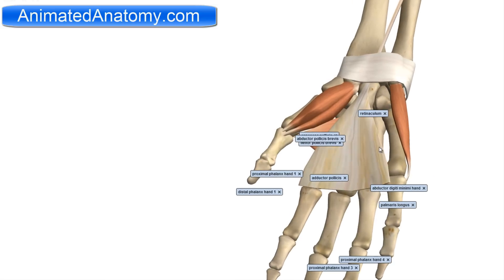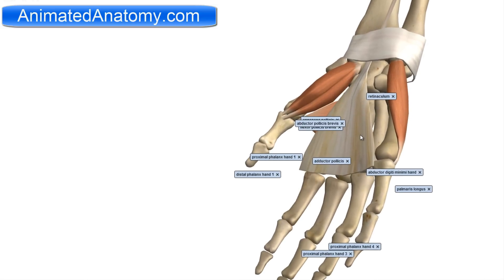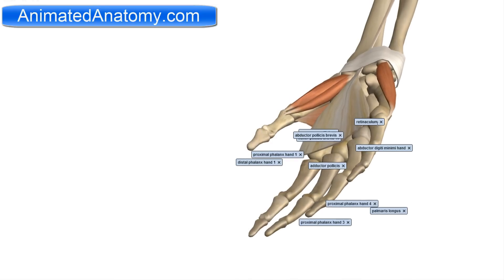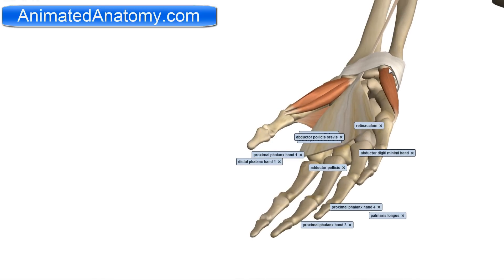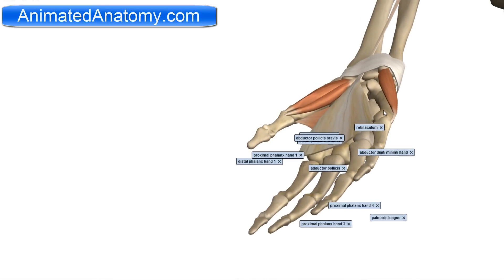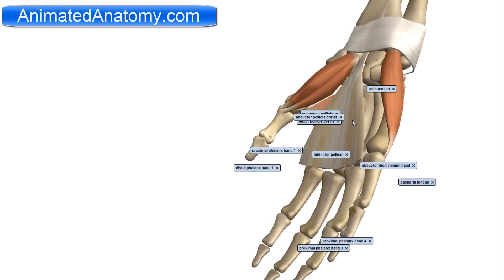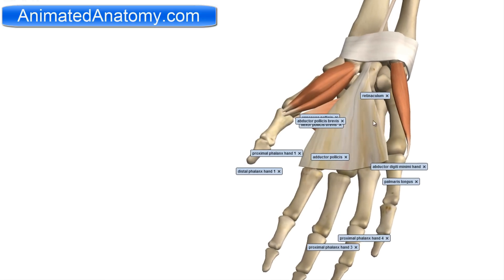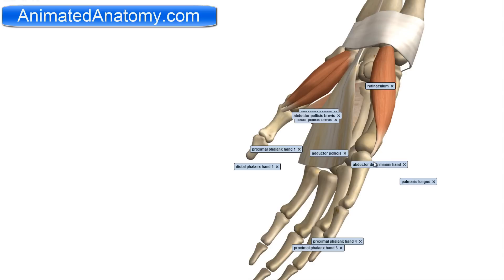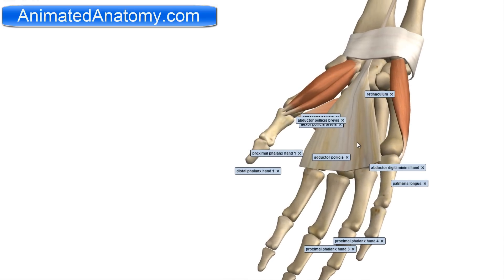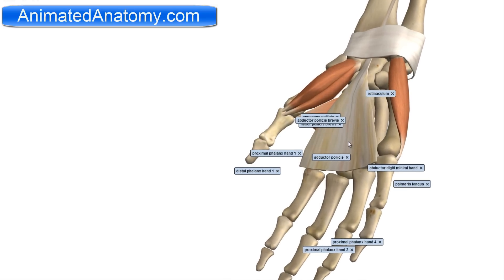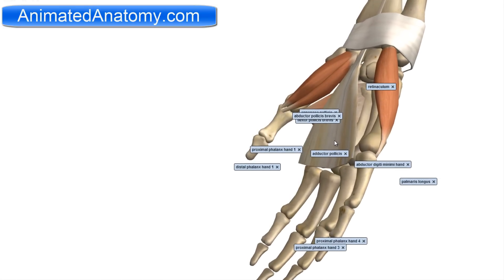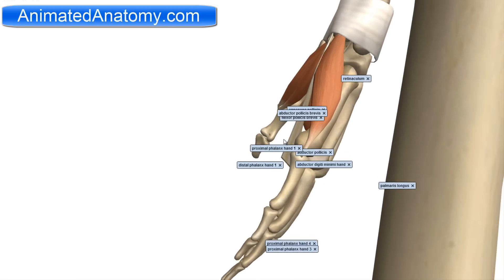I remove the palmaris brevis so we can clearly see the origin of the abductor digiti minimi. This bone here is the pisiform bone. The insertion of this muscle is the base of the proximal phalanx of the fifth finger, more precisely on the medial or ulnar side of the phalanx. The nerve that innervates this muscle is the deep branch of the ulnar nerve, and the muscle serves for the abduction of the little finger — that's why it's called the abductor digiti minimi.